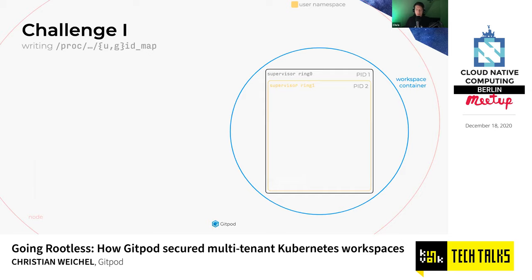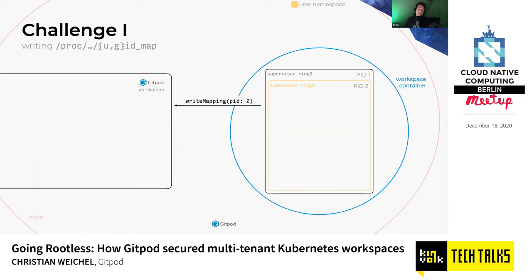The root process we start inside a workspace container is something we call supervisor. Supervisor ring 0 creates the user namespace using the unshare syscall and starts supervisor ring 1. Ring 1 makes a gRPC call to a daemon set pod deployed on that node, which we call workspace daemon. Workspace daemon has enough privileges to actually write to the UID map and GID map files. We basically solve this capability issue by offloading the privileged operation to a service that actually has those privileges.